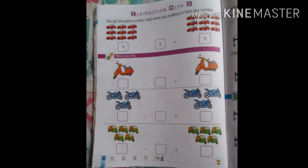Jaysay ye kitnikaar hai? One, two, three, four, five, six, seven, eight, nine. Kitnikaar hai? Nine car. Nine car ko subtract 0 se karenge. To ye same number wapas aajayega.